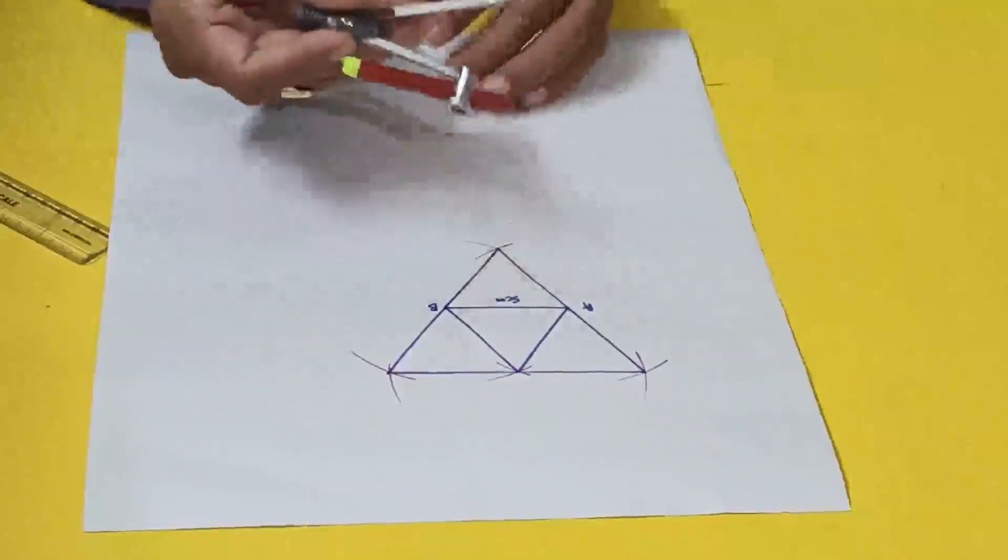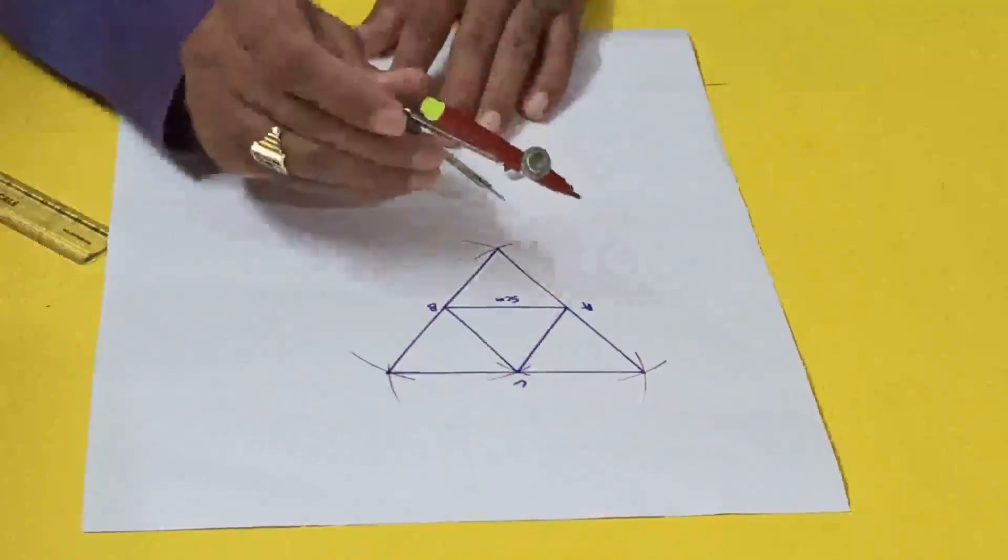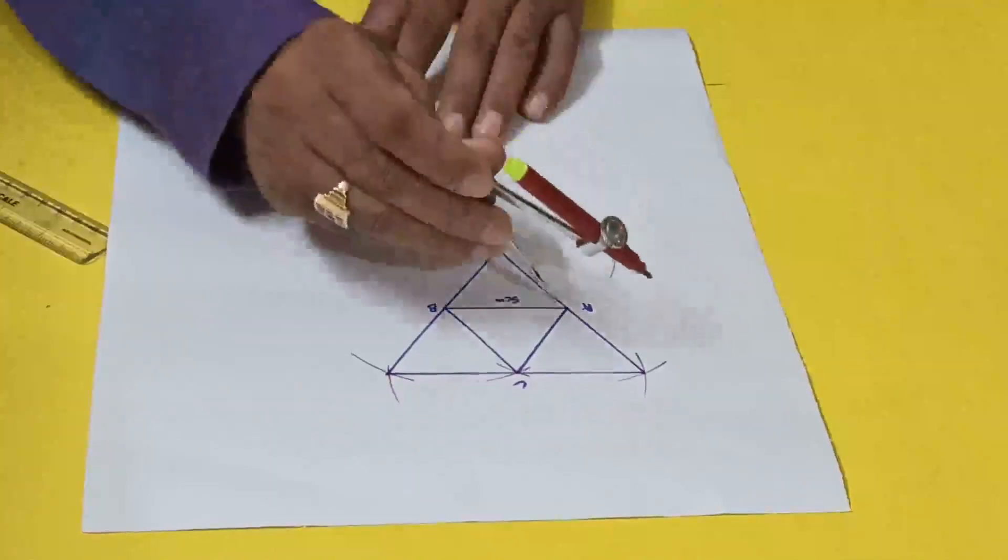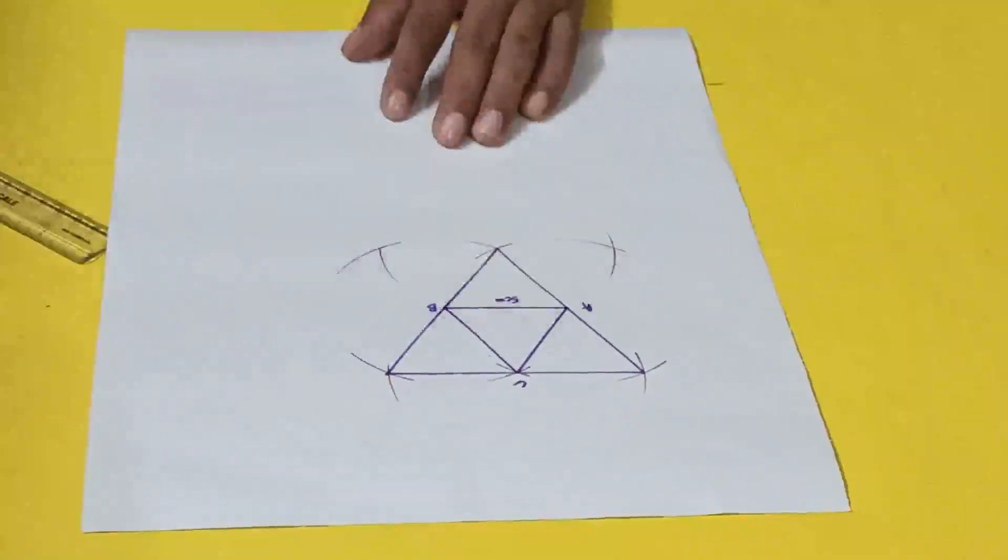Now from here, you can give here C. Now from here one, and in this side another one. Join like this.